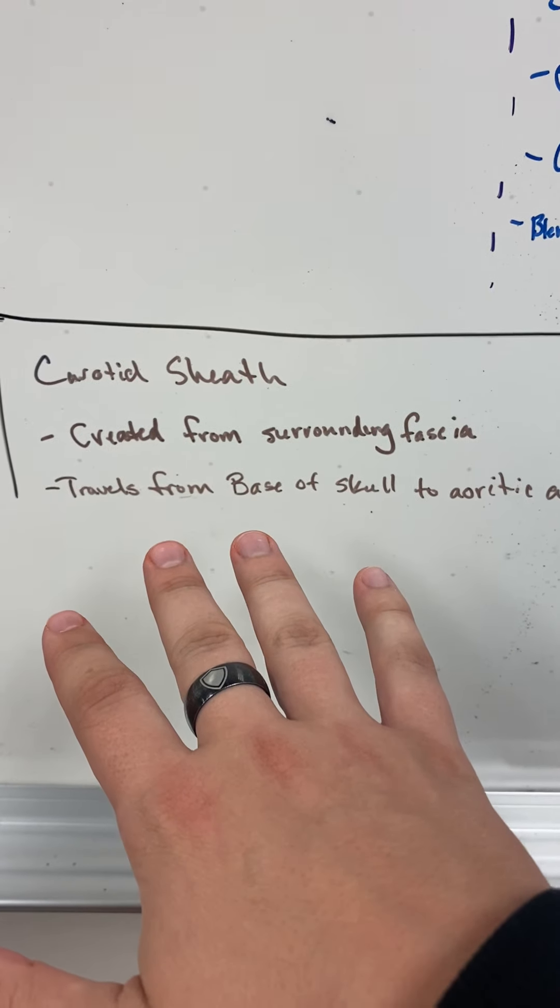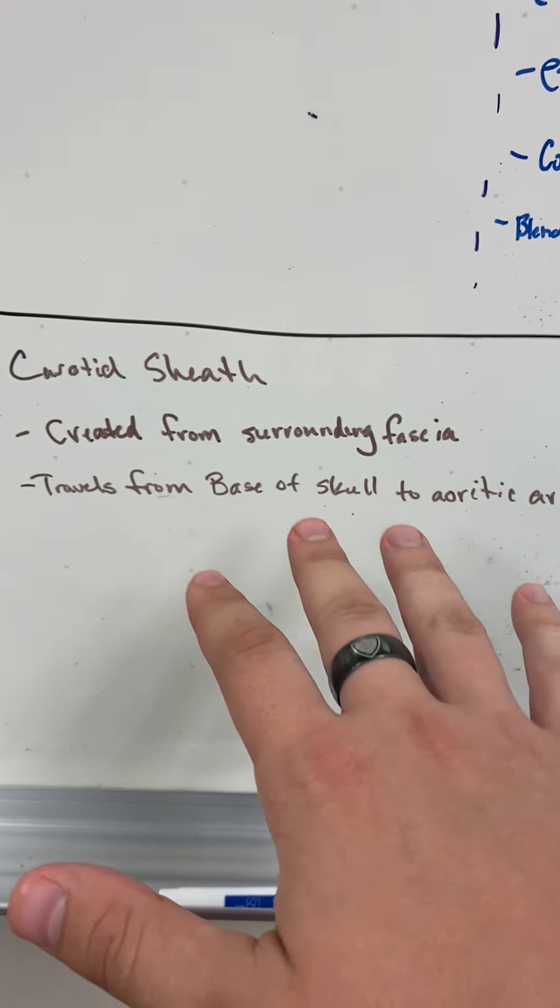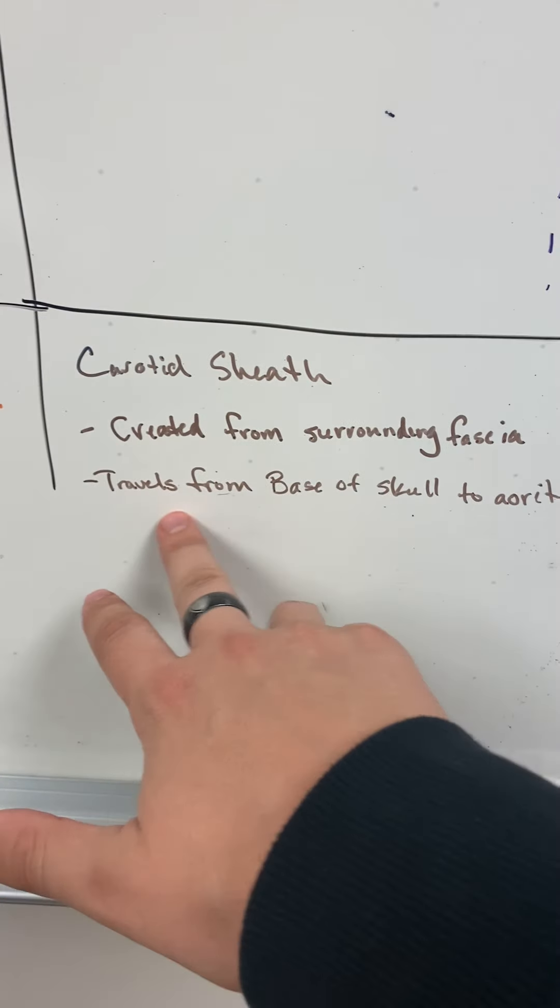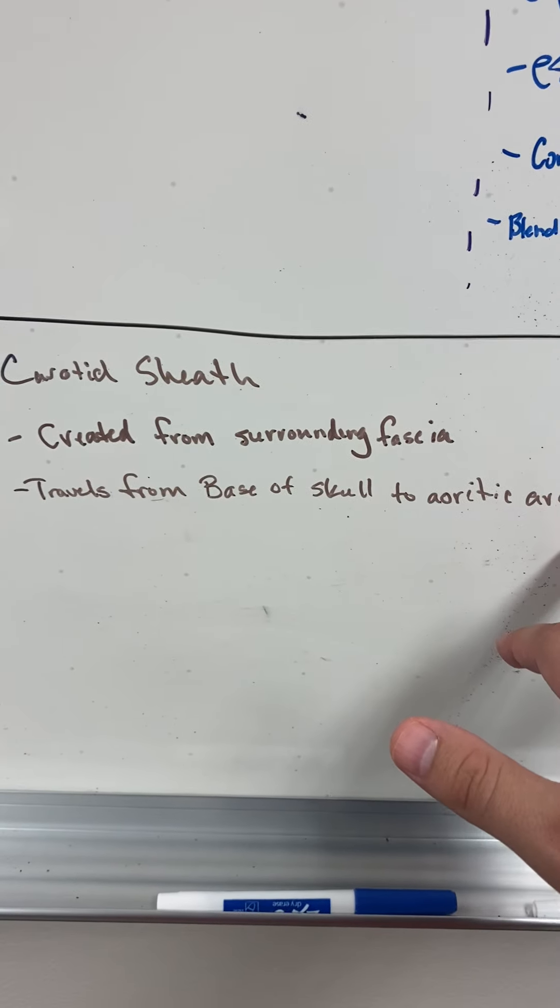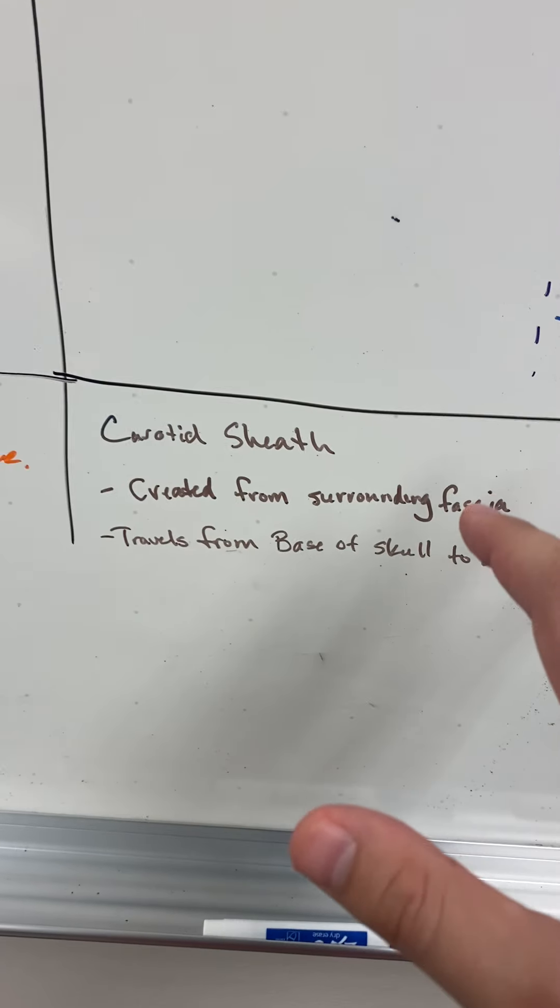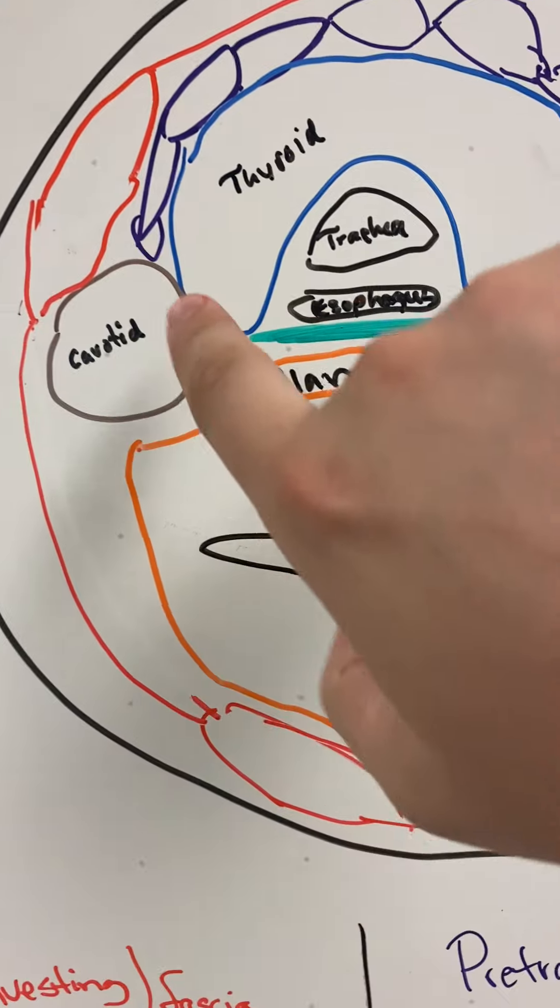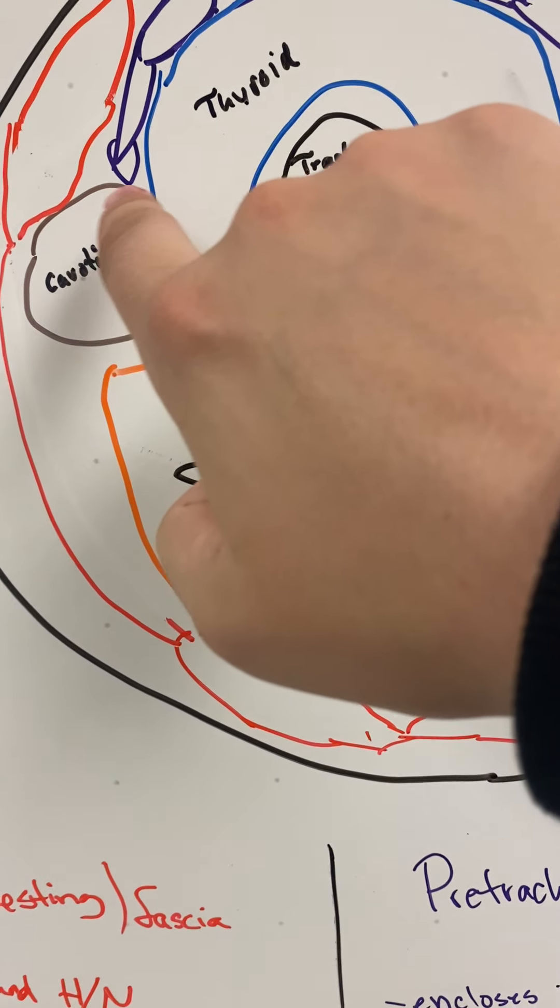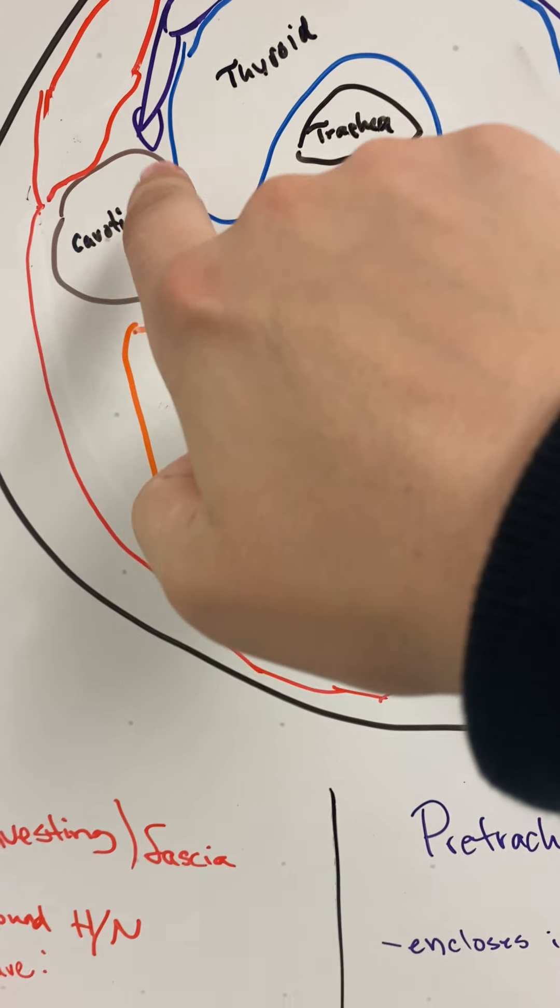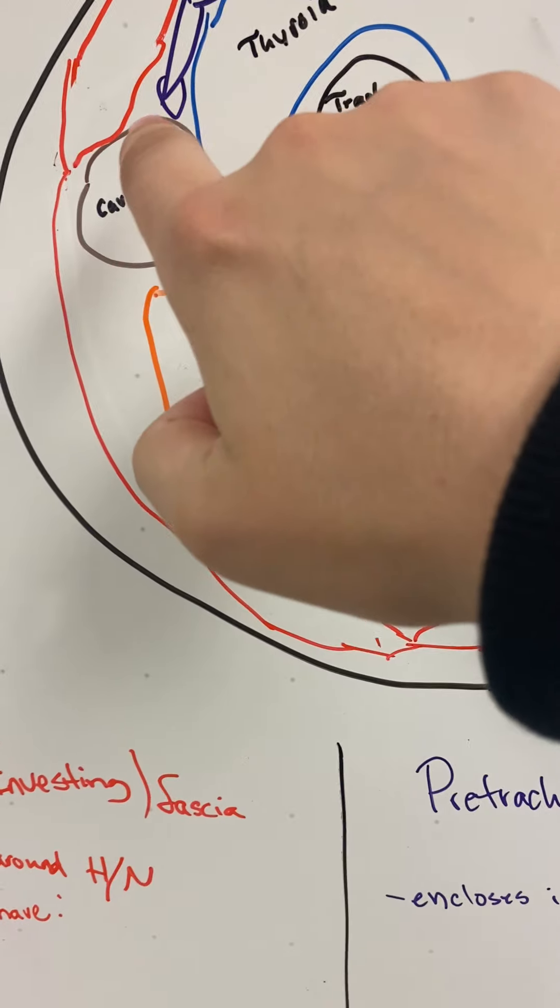The last one is the carotid sheath. It's created by the surrounding fascia and it travels from the base of the skull to the aortic arch. I want to go back to the surrounding fascia—it's probably the important piece to the carotid—that it's created from the wall of this thyroid and this pre-vertebral one. So this is the visceral and pre-vertebral.